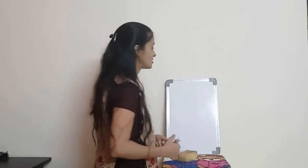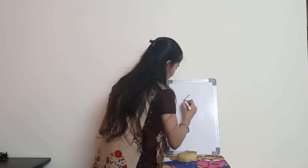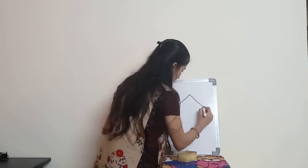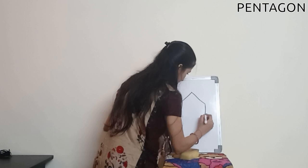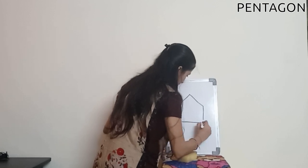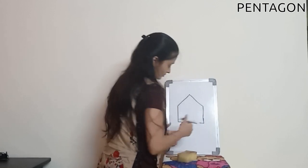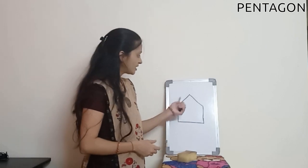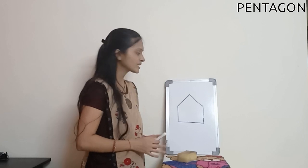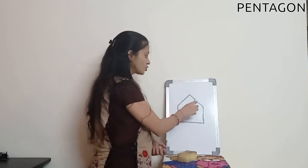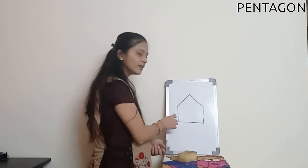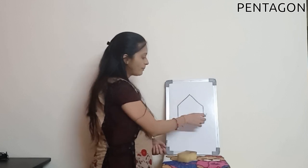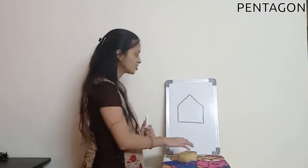Now our next shape is a pentagon shape. Let me draw first. As you can see, this shape has five sides. Let us count: one, two, three, four and five. A pentagon has five sides. This is a pentagon shape.